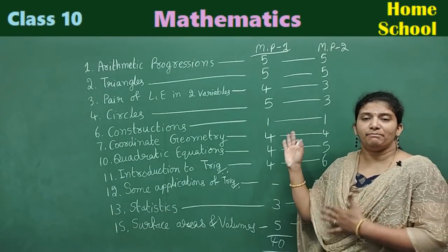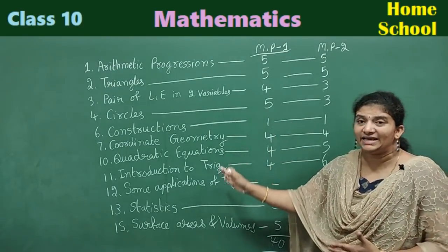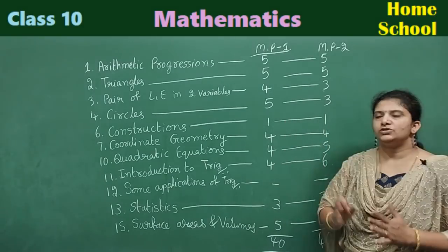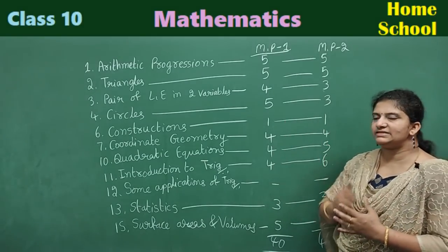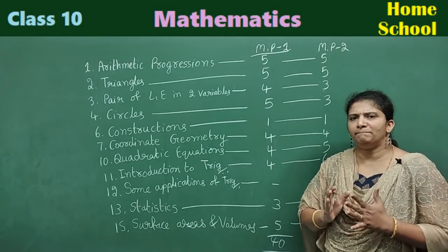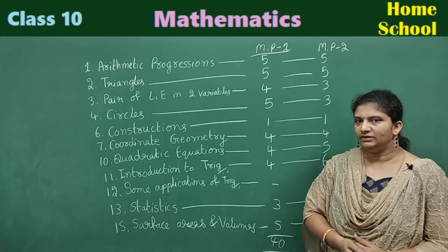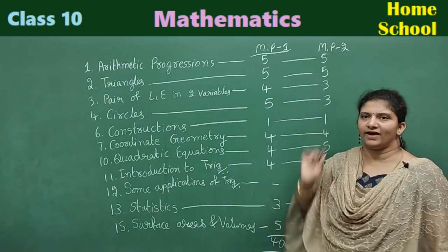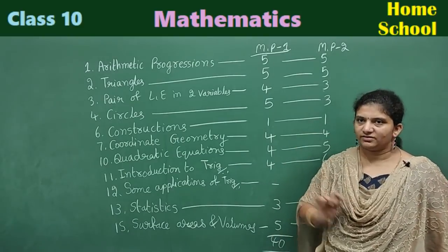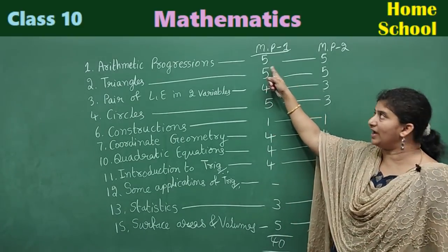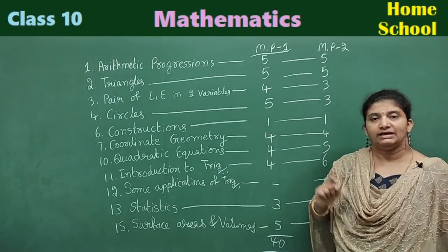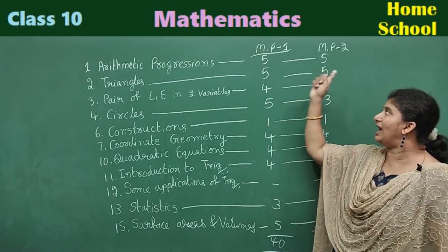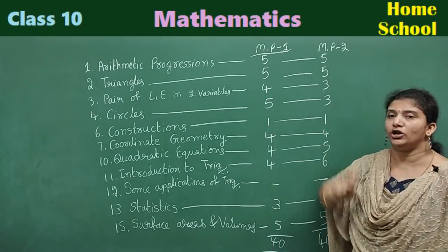These are the number of questions from each chapter in model paper one and model paper two. By seeing this data, we can expect compulsory questions from each chapter. Arithmetic Progressions — you are going to get five questions for sure. Model paper one: five; model paper two: five. Same manner, Triangles — five questions in model paper one and five in model paper two.